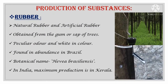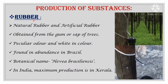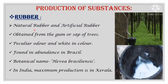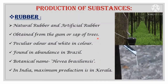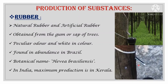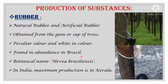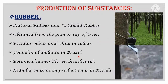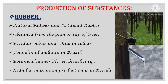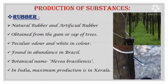Production of substances — let us look at rubber. Rubber is of two types: natural rubber and artificial rubber. It can be obtained from the gum or sap of trees. This is a sticky, peculiar-smelling, white-colored substance — the excreta or sap of trees. Rubber trees are found in abundance in Brazil, and the botanical name is Hevea brasiliensis. In India, maximum production is found in Kerala state.